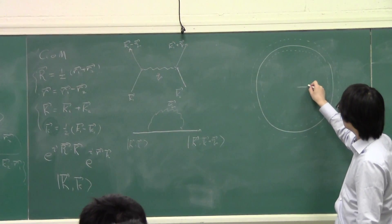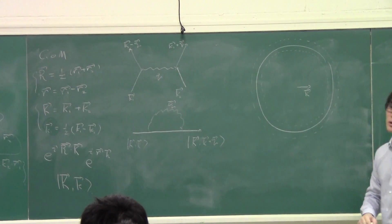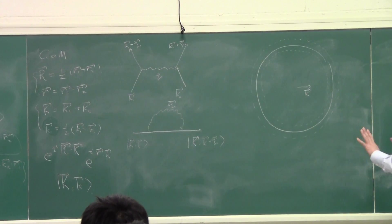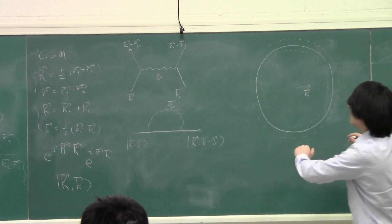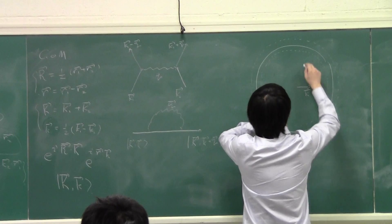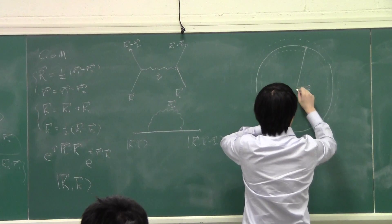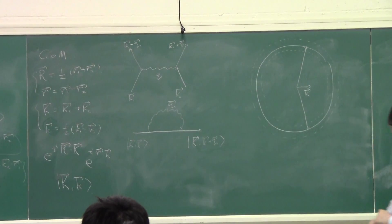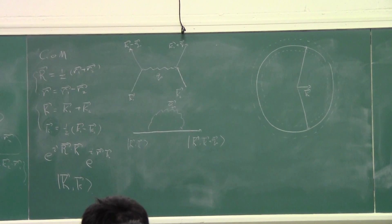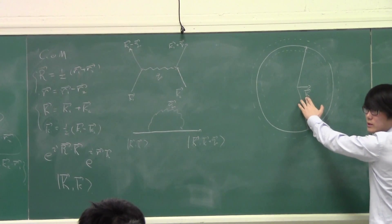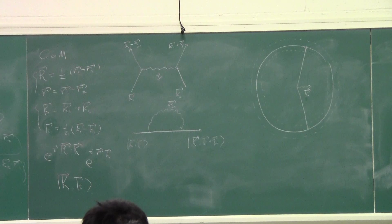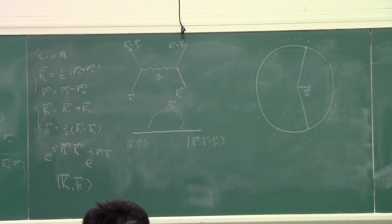If I started with a state that has a total momentum like this, I'm looking at the YZ plane, which has a sphere. This can be composed of two states. After the scattering event, their relative momentum is going to change, and the final state might be the same or different.